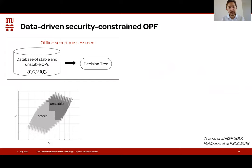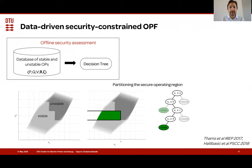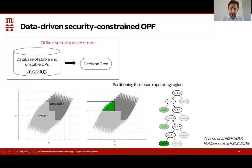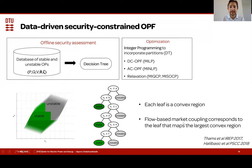Every leaf node in the decision tree corresponds to a convex sub-region of the true stability region. By training this tree, each different leaf node corresponds to one such sub-region, and the union of those leaf nodes corresponds to the whole stable region. This is actually real data from a 14-bus system. Having encoded this information into the decision tree, it's straightforward to convert it to a mixed integer linear program.